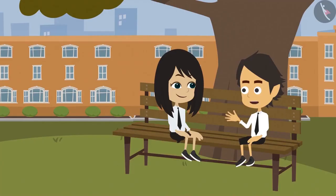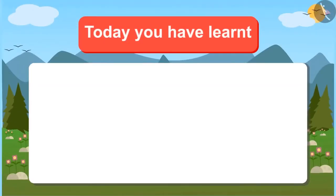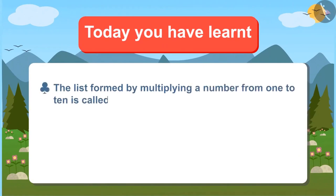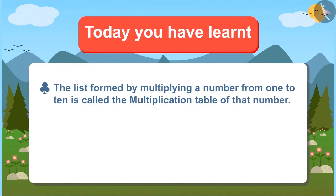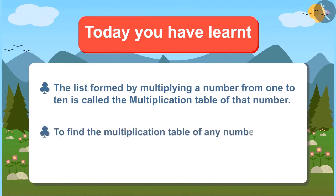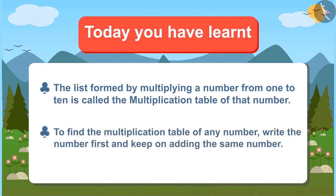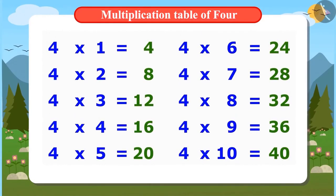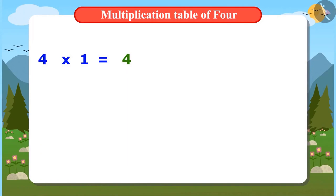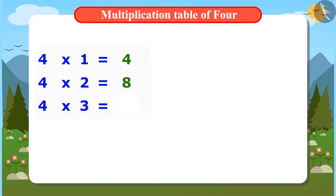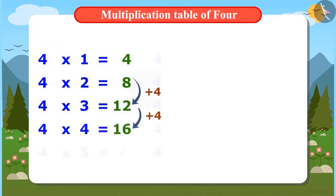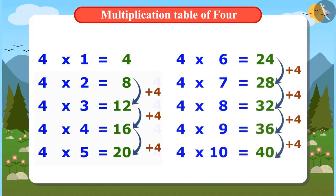This is fun. This way, we can easily remember the multiplication table of 4. Today, you have learned that the list formed by multiplying a number from 1 to 10 is called the multiplication table of that number. And to find the multiplication table of any number, write the number first and keep on adding the same number. For example, to find the multiplication table of 4, write 4 first, add 4 to it, then add 4 again to the result, and keep doing this till you get the whole multiplication table.